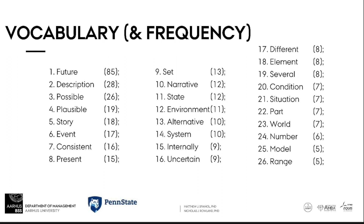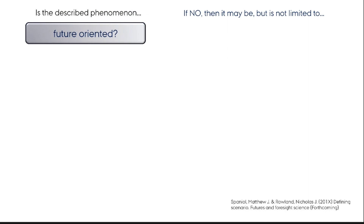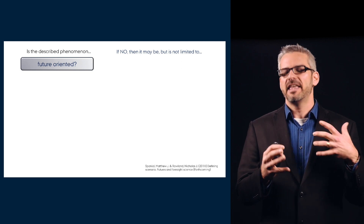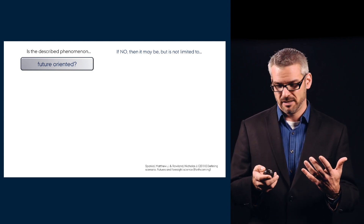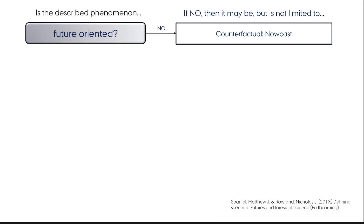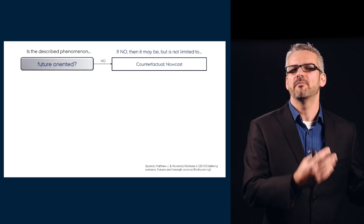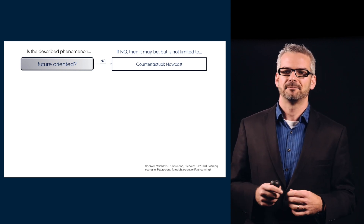We made an assessment of the frequency of vocabulary in those definitions and organized them into a hierarchical chart of categories. By asking a number of questions, we try to get at the notion of what a scenario is. The first question: is the described phenomenon future-oriented? That's our first cue that we're talking about a scenario. If it's not, we're talking about other things — such as the counterfactual, which has you think about a time period in the past, change some events, and see if the present would still look the same. Imagine going back in time and imagining someone was never born — would the world still look the same?